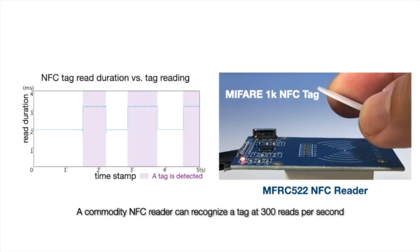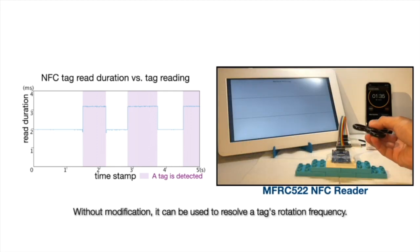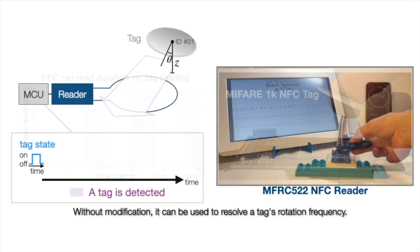A commodity NFC reader can recognize the tag at 300 reads per second. Without modification, it can be used to resolve a tag's rotation frequency.